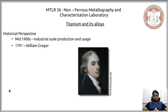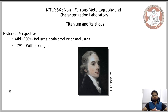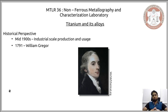Gregor was taking a stroll along the beaches of Cornwall in Great Britain, and he found that certain sands were being attracted to magnets. In addition to being a clergyman, he was an amateur geologist. He found these sands, as opposed to other sands, had magnetic properties. When he studied them, he found they comprised two different oxides: iron oxide, which gave the sands a typical color, and another colorless or light-colored oxide he could not identify.